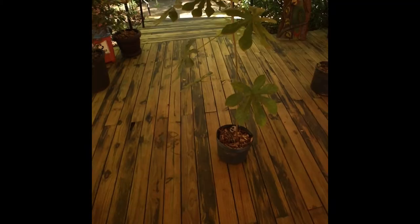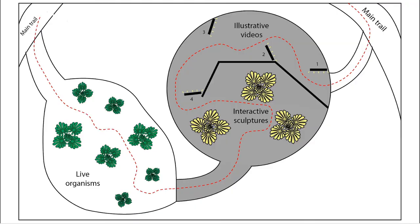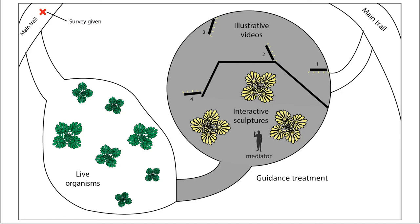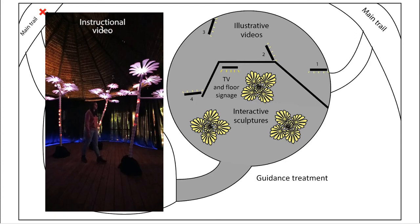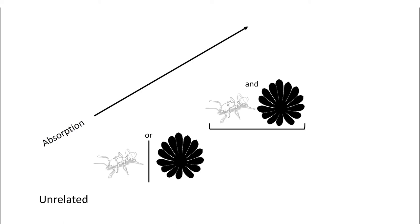Shortly after joining back with the main trail, we gave them an incredibly short, open-ended survey: what was the theme of the exhibit? We tested several methods of guidance that fell into two categories: a human mediator, or video and text signage. We separated survey responses into different categories based on level of absorption — mentioning something unrelated, mentioning ants or plants only, mentioning both ants and plants, and mentioning the core target concept, the ant-plant mutualism.